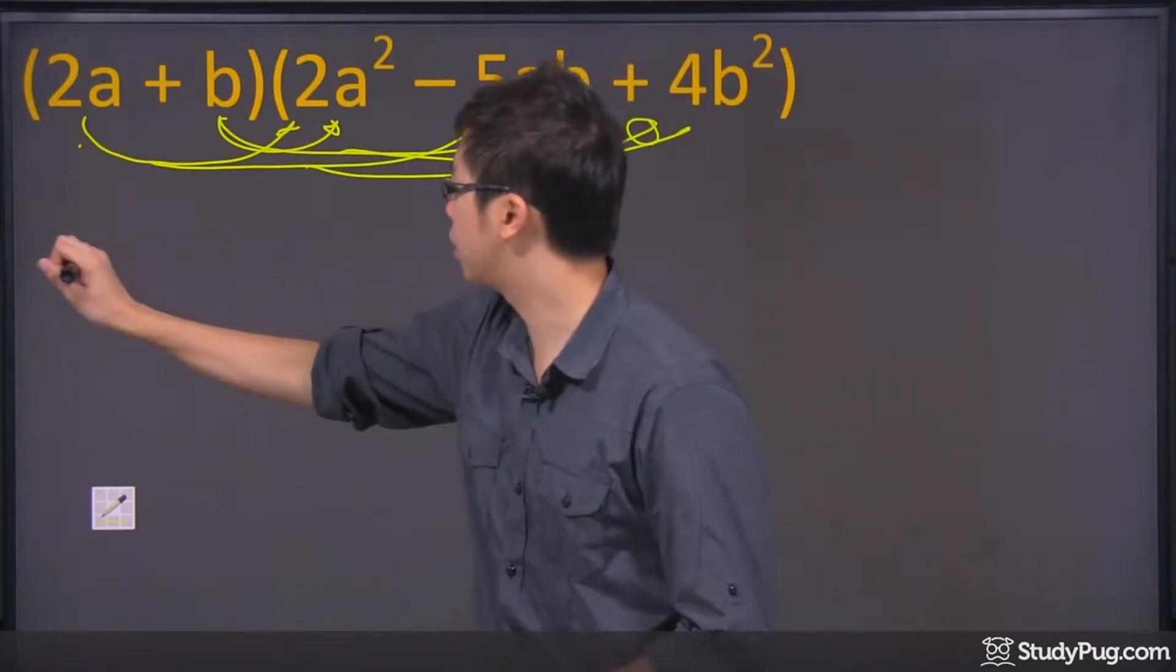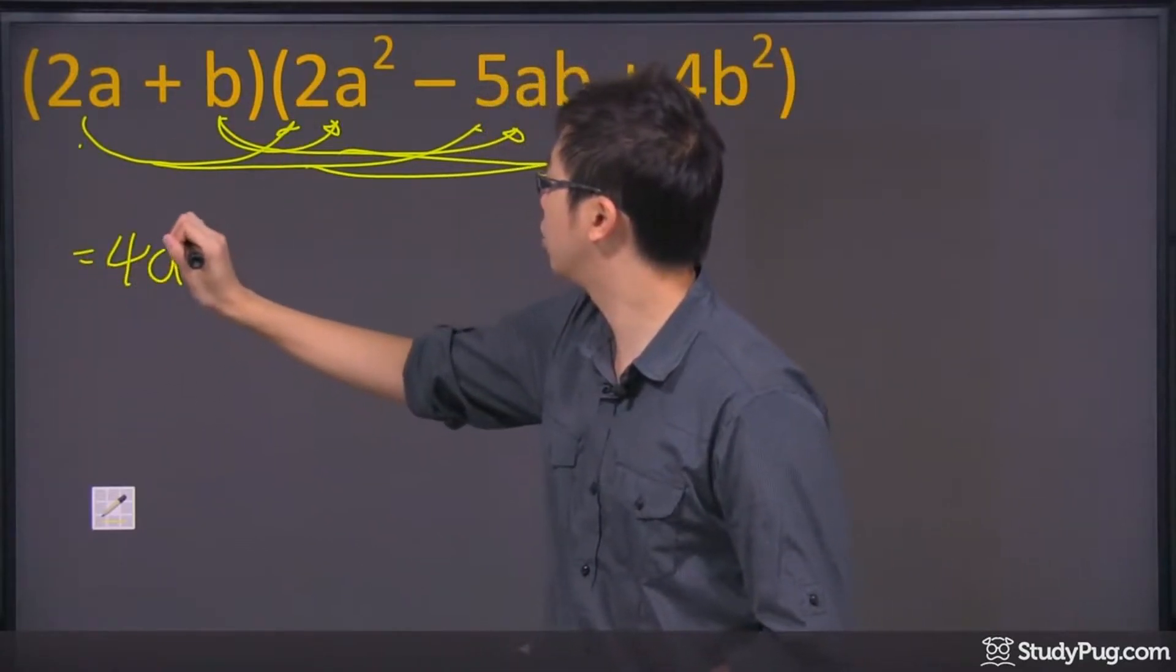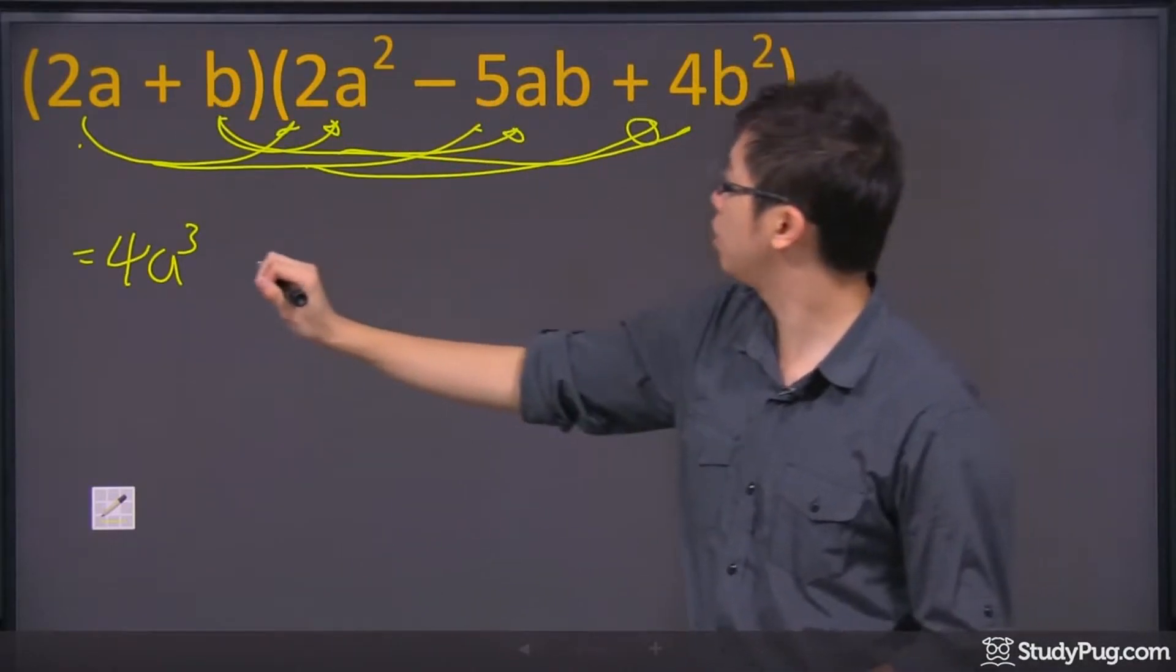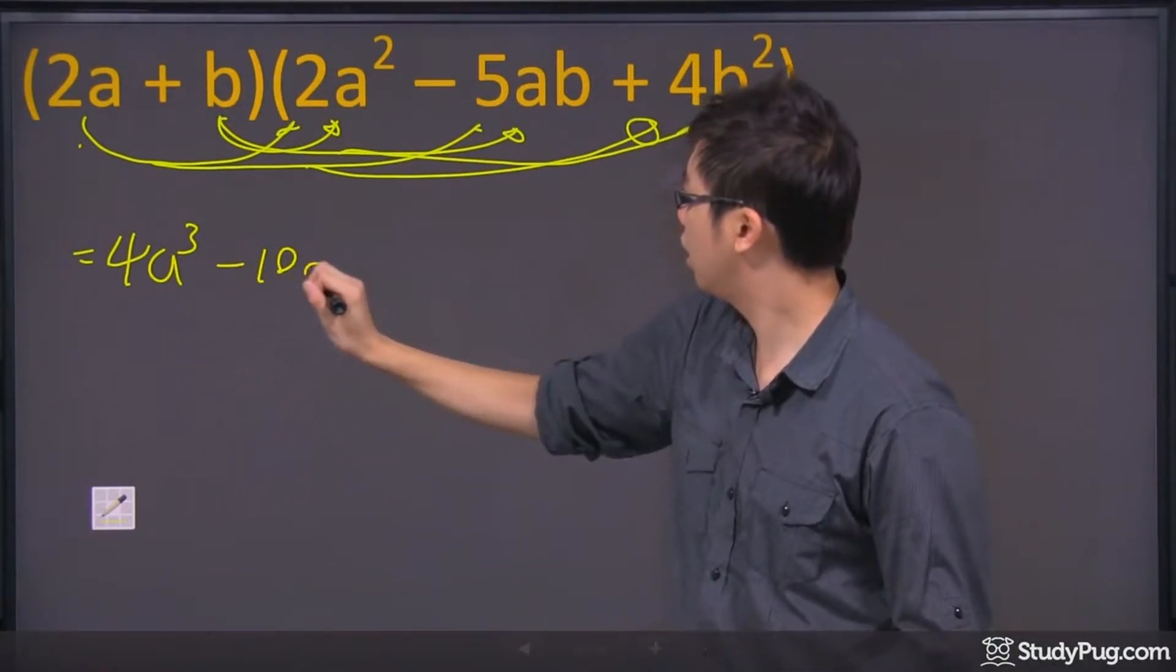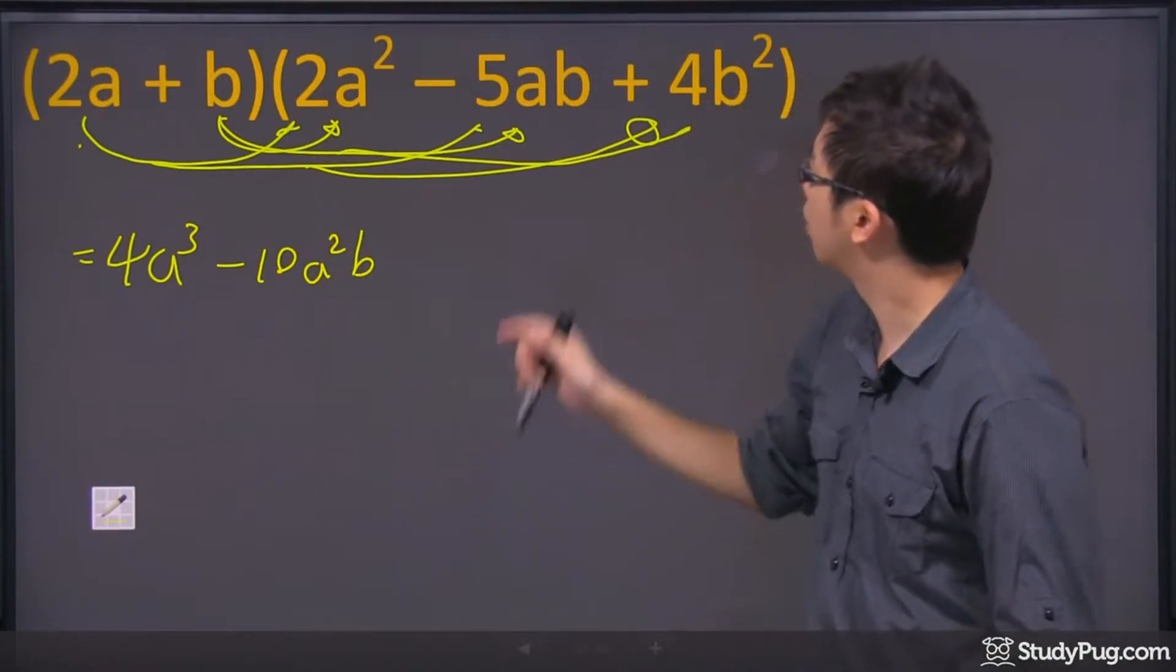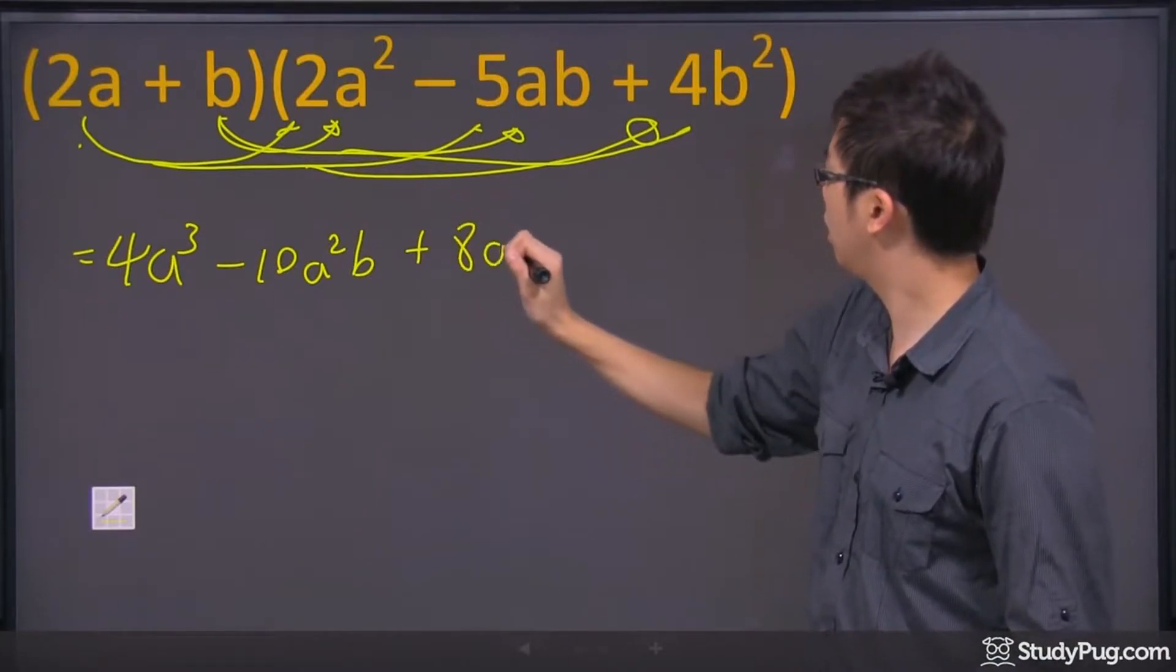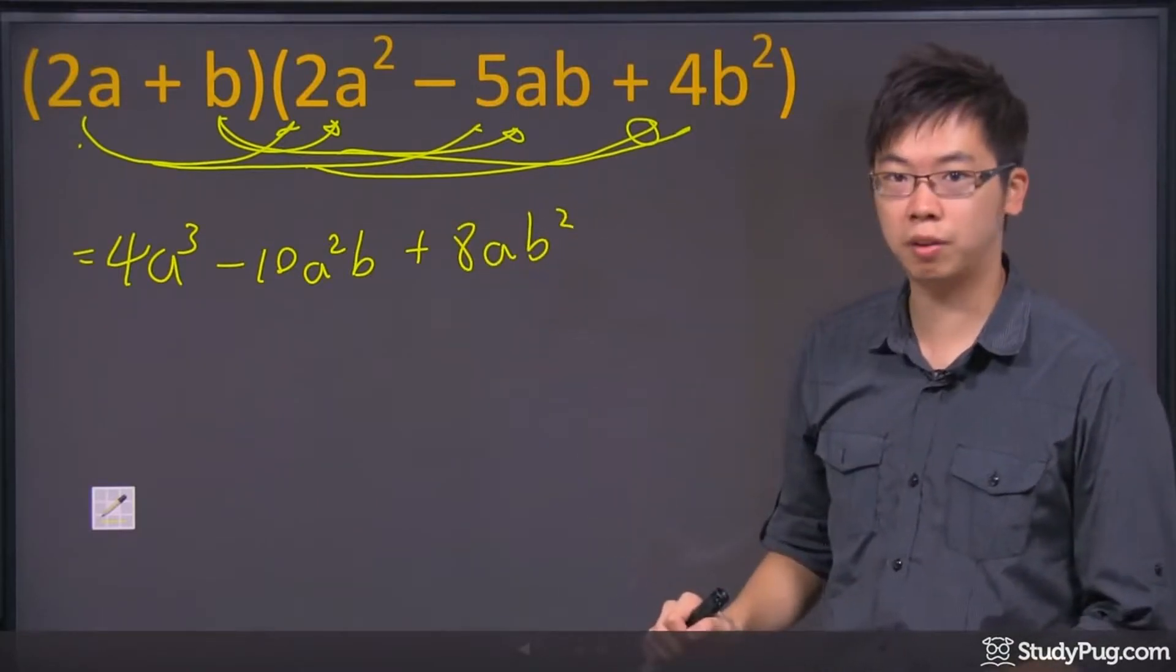2a times 2a squared, we got ourselves the 4a to the power of 3. Then we got 2a times the negative 5ab, we got negative 10a squared times the b. And then the last one right here, we got the 8ab squared, fair enough.